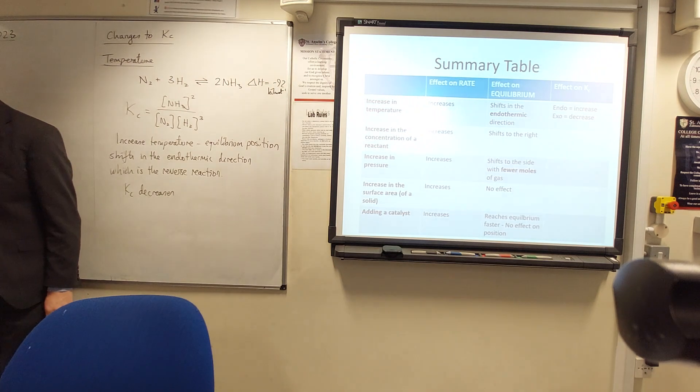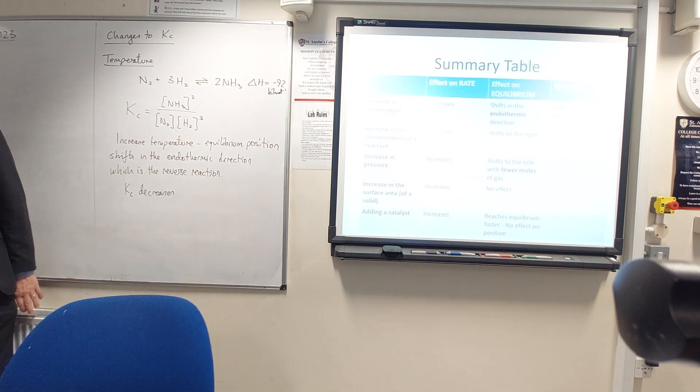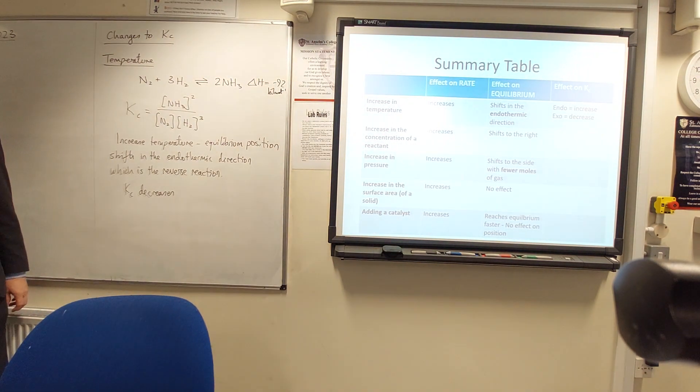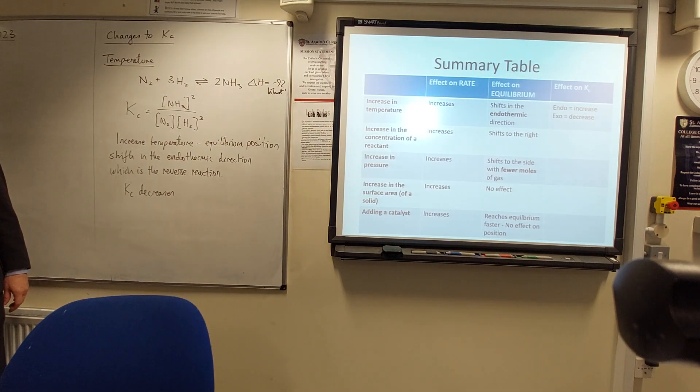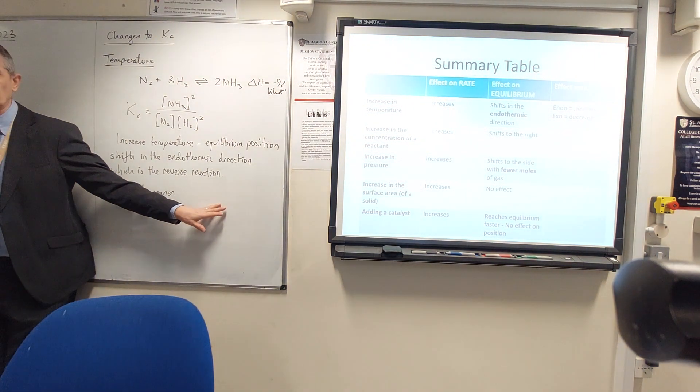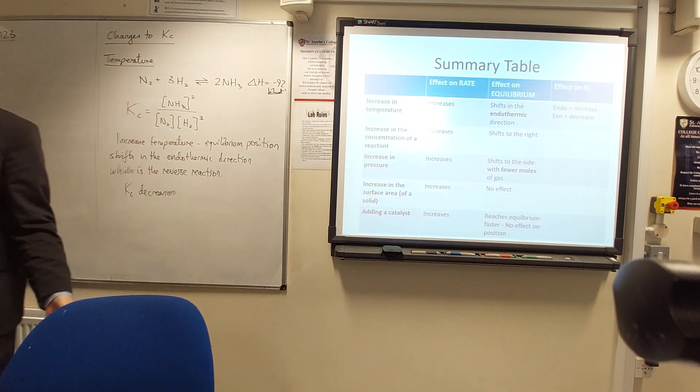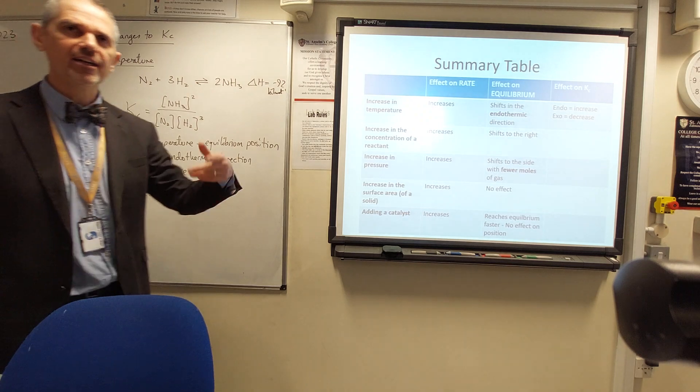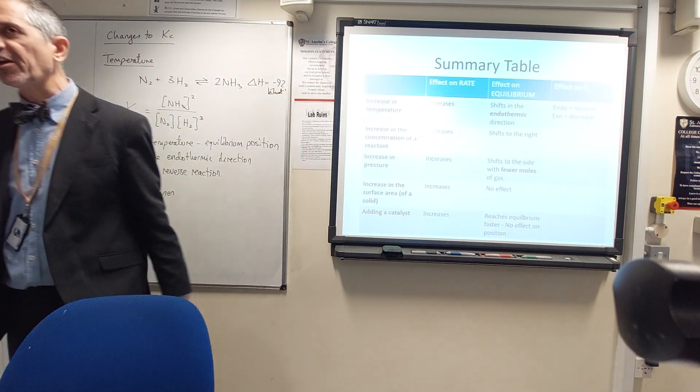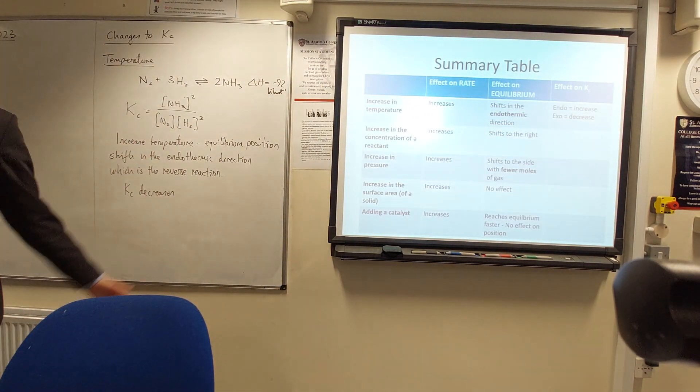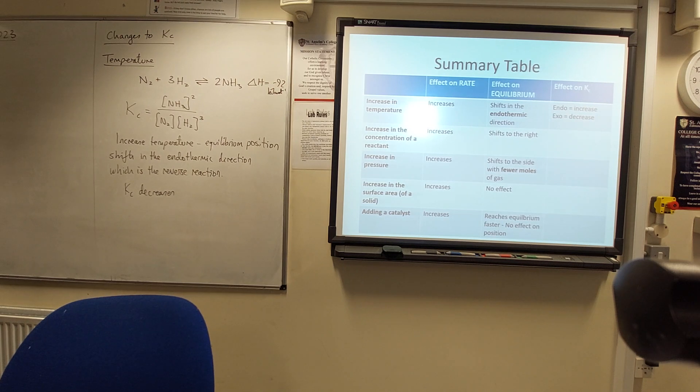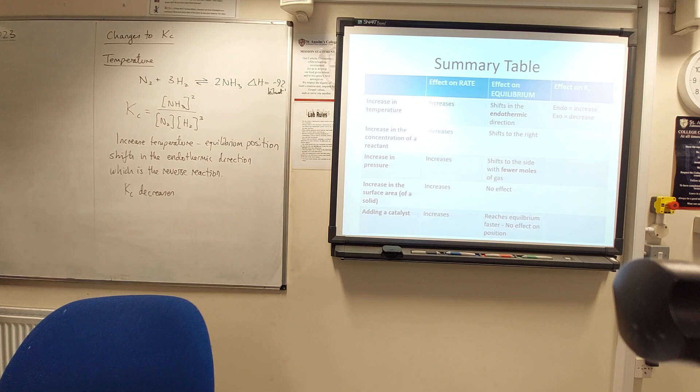So we have to look at each equation, but quite often you would have done this kind of question already. You know, it's one of those structured questions where they'll say what's the effect on K, what's the effect on equilibrium position if we change the temperature to 298 Kelvin or whatever, and then what will be the effect on Kc? Everyone alright with that? This is one of the trickier questions in AQA.